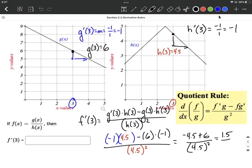divided by 4.5 quantity squared. 4.5 quantity squared is 20.25.